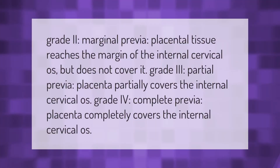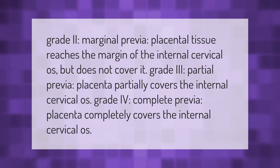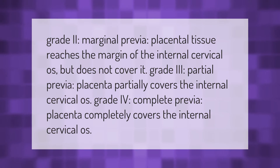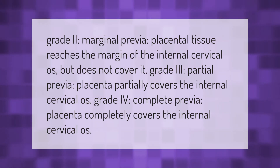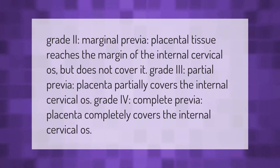Grade 2 marginal previa: placental tissue reaches the margin of the internal cervical os but does not cover it. Grade 3 partial previa: placenta partially covers the internal cervical os. Grade 4 complete previa: placenta completely covers the internal cervical os.